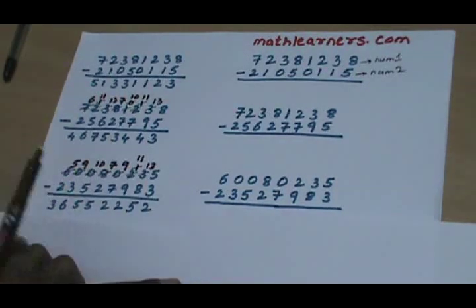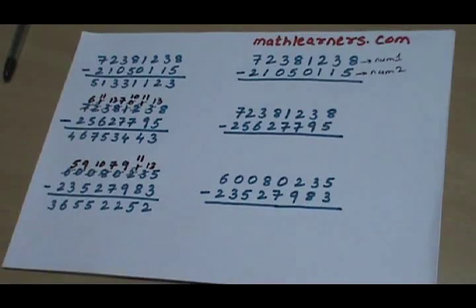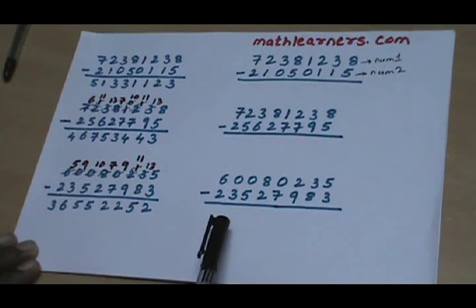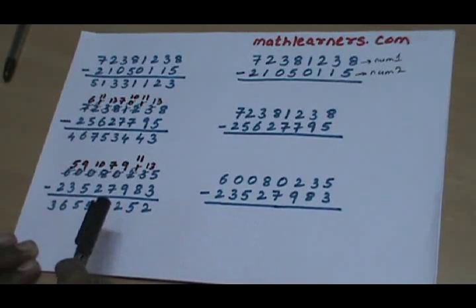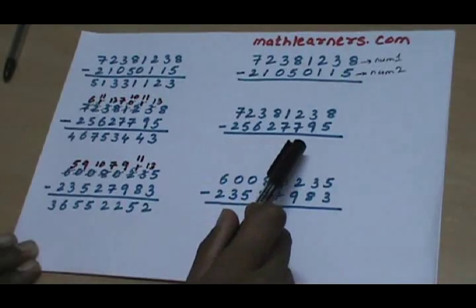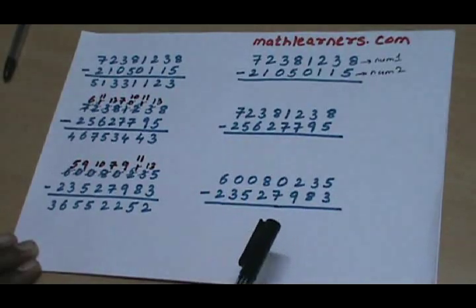More problems arise when we have to subtract from zeros, as many people are not sure whether to take 9 or 10. Such difficulty is resolved to a great extent using Vedic Mathematics. We use a process called the Vinkalam Process, which resolves this difficulty. Before looking at how to do subtraction using Vedic Mathematics, let's first see what the Vinkalam Process is.